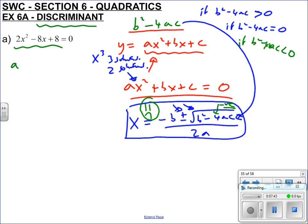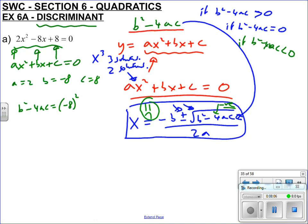Let's use it then. We have it in the form ax squared plus bx plus c, so a must be 2, b must be minus 8, and c must be plus 8. We can go straight for the b squared minus 4ac formula. b squared is minus 8, all in brackets, squared — be careful: if you put minus 8 squared in your calculator it does 8 squared then times by minus one. You want everything squared, so put it in brackets. Then minus 4 times a, which is 2, times c, which is 8.